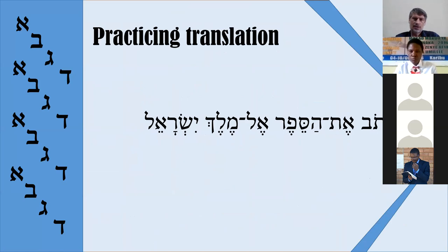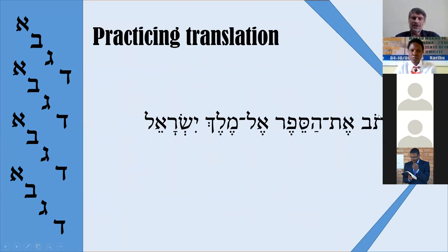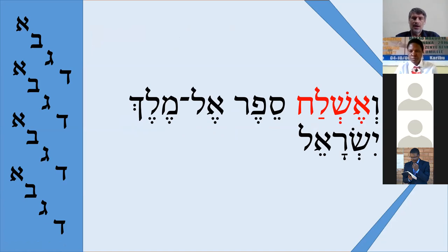Regarding the theme vowel: in many verbs it is holem — yiqtol, yishmor, yimloq — but sometimes the theme vowel is patah, as in yishlach. Don't be confused — it is the same Yiqtol conjugation, but some verbs have a different theme vowel.